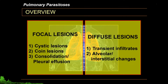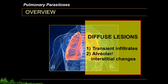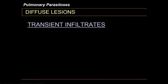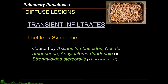We're done with focal lesions. Now let's proceed to diffuse lesions, which include transient infiltrates and alveolar-interstitial changes. For diffuse transient infiltrates, we refer to the well-documented Loeffler syndrome.